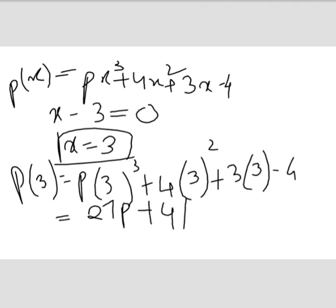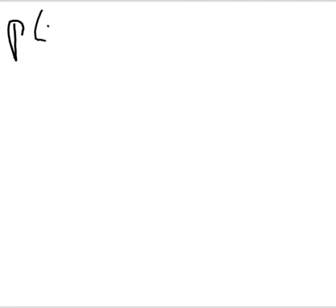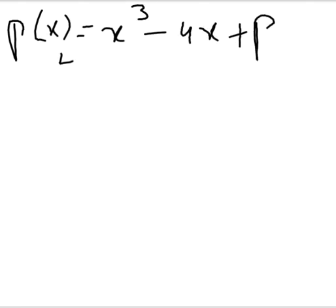Remember this — 27p + 41 is the remainder of the first p(x). We'll call it remainder R1, so just box it. Now the solution is not yet complete. We have one more p(x) — the second one: x³ - 4x + p.